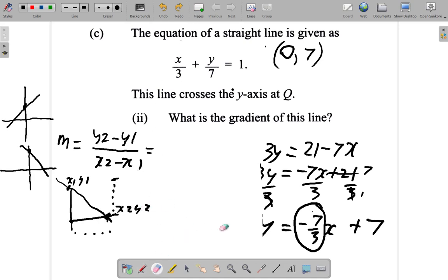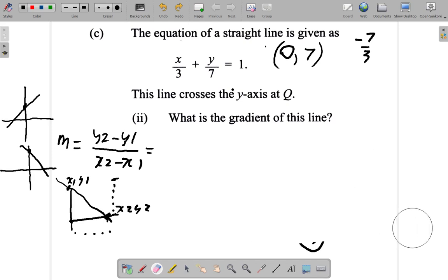Now, let's make some space. I want to make a note first of all that the gradient found was negative 7 over 3. Let's try using this method and see what happens. Here we already have one point, (0, 7). Call this point 1, x1, y1. Now this line will cross the x-axis at some point. And when it crosses the x-axis, then y is 0. So let's find out what is x when y is 0.